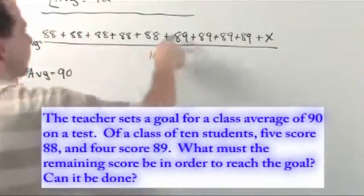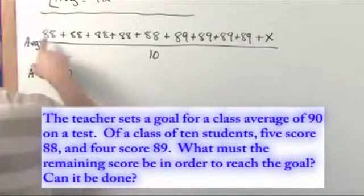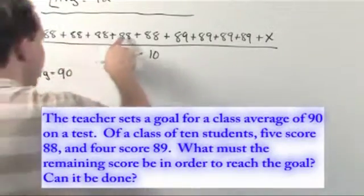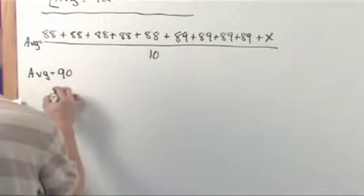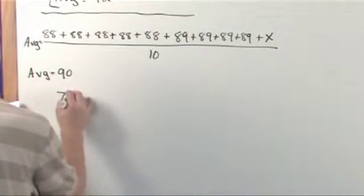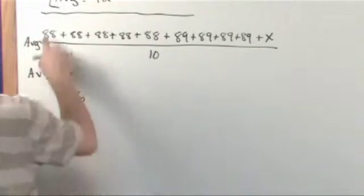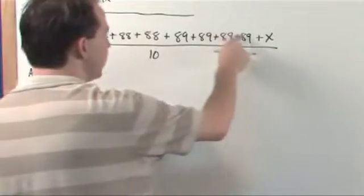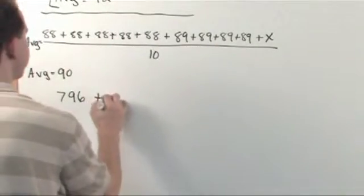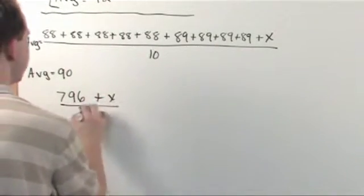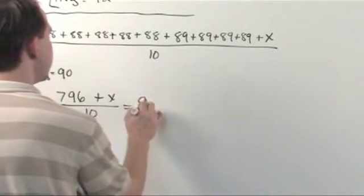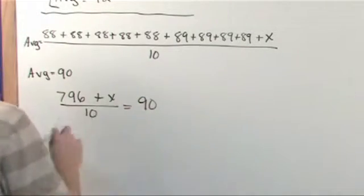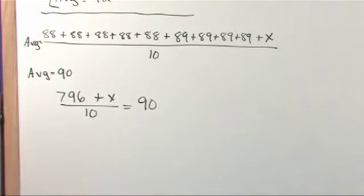Let's add up the stuff on the top. 88 five times plus 89 four times gives you 796. So we have (796 + X) divided by 10, and the goal is 90. That's what we want to achieve, so we're trying to solve for X.